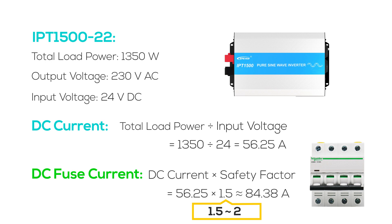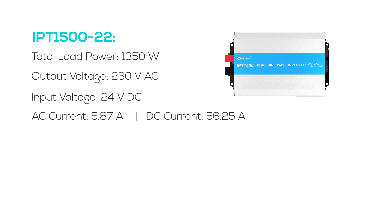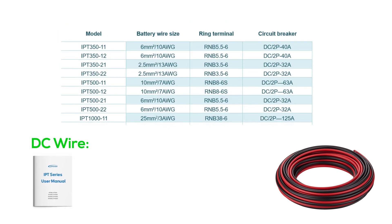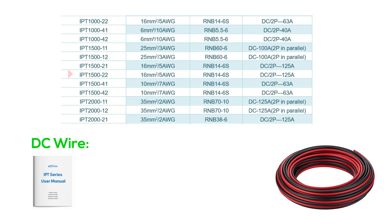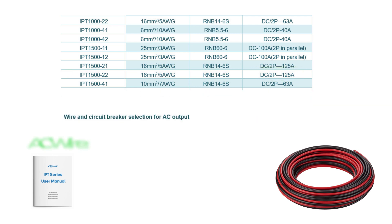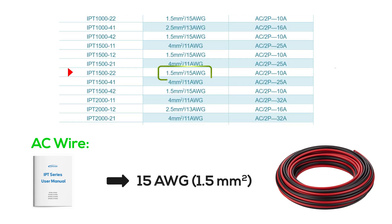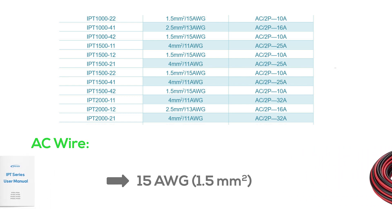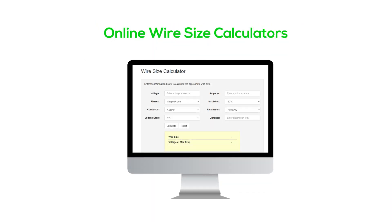For the DC fuse, the closest value higher than 84.38 amperes is acceptable. Lastly, for wire sizing according to the IPT manual for the IPT 1522: on the DC side, a 5 AWG or 16 square millimeter wire with an RNB 14-6S ring terminal and a DC 2-pole 125-ampere fuse is recommended. On the AC side, a 15 AWG or approximately 1.5 square millimeter wire with an AC 2-pole 10-ampere fuse is recommended. An online wire size calculator can also be used, but note it may differ from the manual since the manual offers the maximum wire size needed.